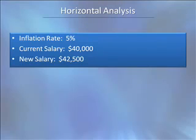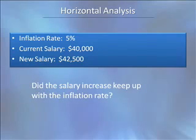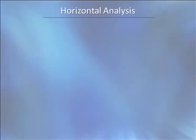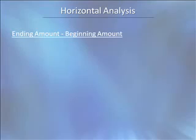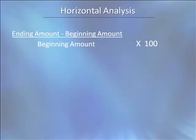A horizontal analysis focuses on the percent of change from one period to another. The salary is changing from $40,000 to $42,500. We need to determine if the increase in salary has kept up with the 5% inflation rate. Start by subtracting the beginning amount from the ending amount to determine the amount of change. Divide the amount of change by the beginning amount — this results in a decimal. Multiply by 100 to convert the decimal to a percentage.